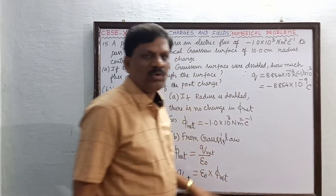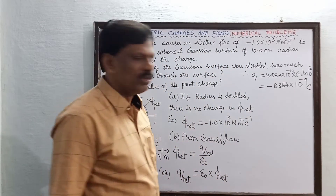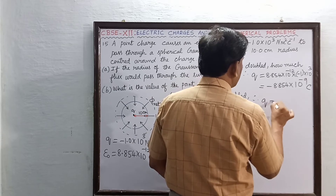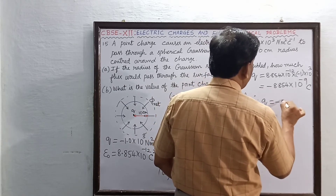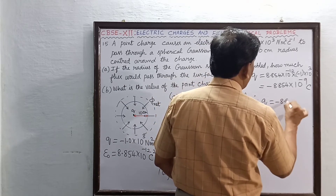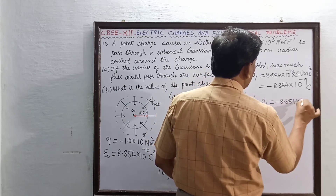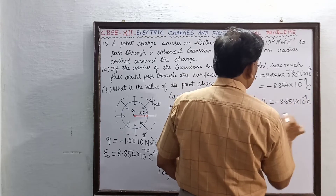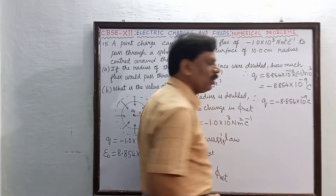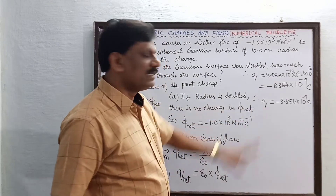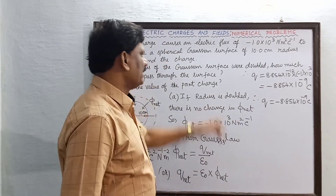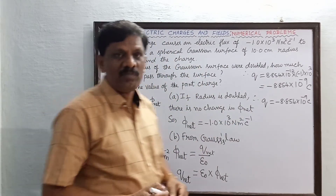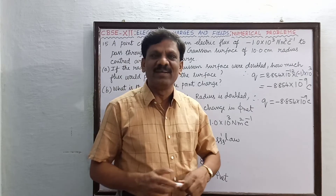So minus 10 power minus 9 Coulomb is nano Coulomb. Therefore, the quantity of charge is minus 8.854 into 10 power minus 9 Coulomb, or minus 8.854 nano Coulomb. This is the answer for the second part of the problem. I hope you understood well.